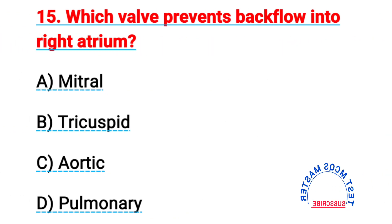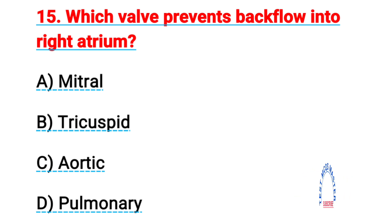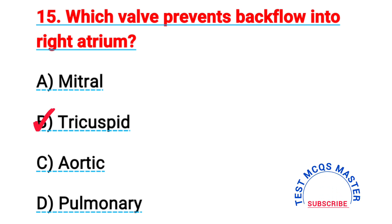Question number fifteen: which valve prevents backflow into the right atrium? The right answer is B, tricuspid valve.